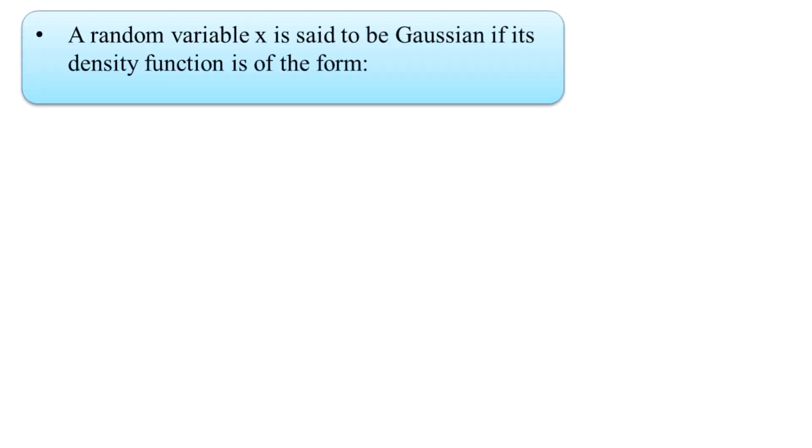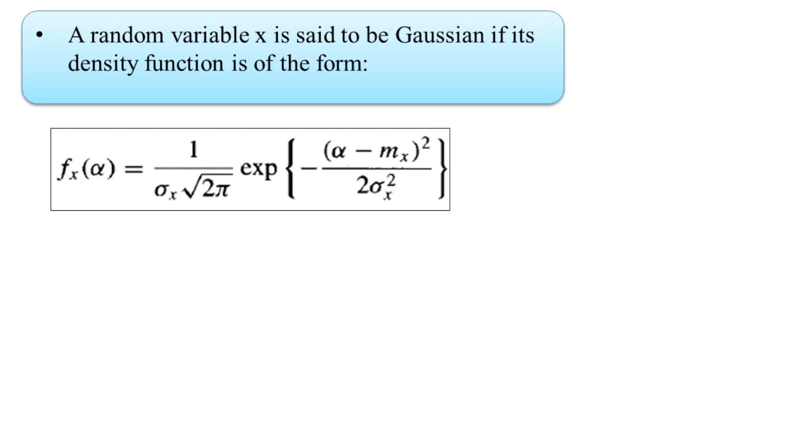As we have covered the definitions and symbolic representations in mathematical form for probability theory, we use the variable X or variable Y to represent the random variable. There must be certain criteria because of which we can call a random variable to be of the Gaussian type. Mathematically, when we are representing a random variable X, it will be a Gaussian type when its probability density function is expressed in this formula here.